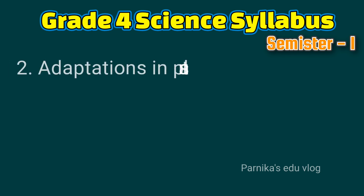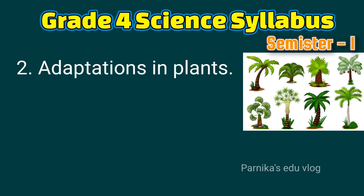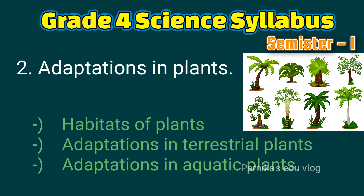The second lesson is adaptations in plants. In this we have habitats of plants, adaptations in terrestrial plants, and adaptations in aquatic plants. In this lesson we can understand how plants show different adaptations based on their environments and different types of habitats also.